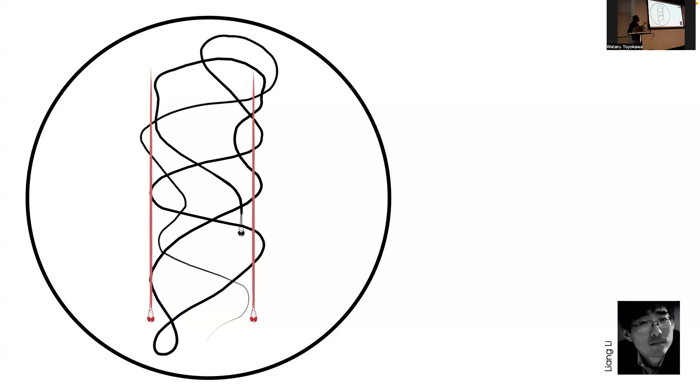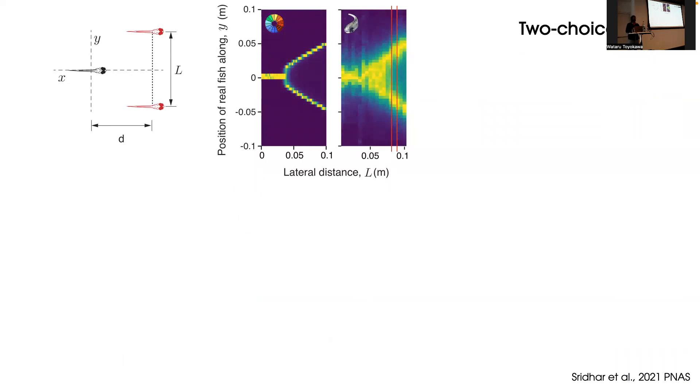We get the trajectory of the real fish as it moves and follows these virtual fish. Based on the movements of the real fish behind these virtual conspecifics, we get a heat map of the position of the real fish. The data is represented from the frame of reference of the virtual fish. We compress it along one axis. With many experiments where we vary the lateral distance between virtual fish, we stack all these data together and we obtain this exact bifurcation the model predicts.